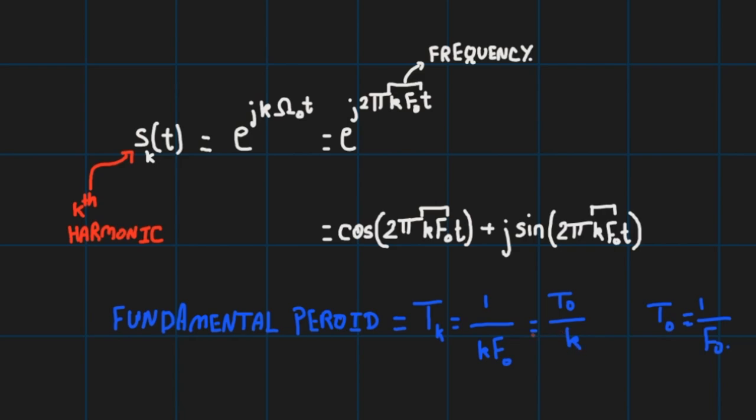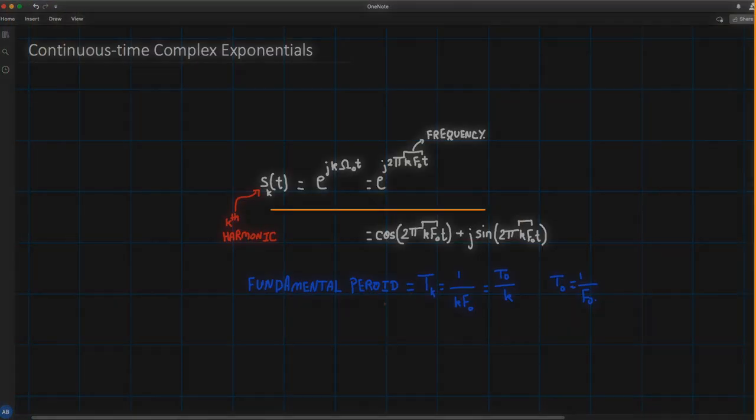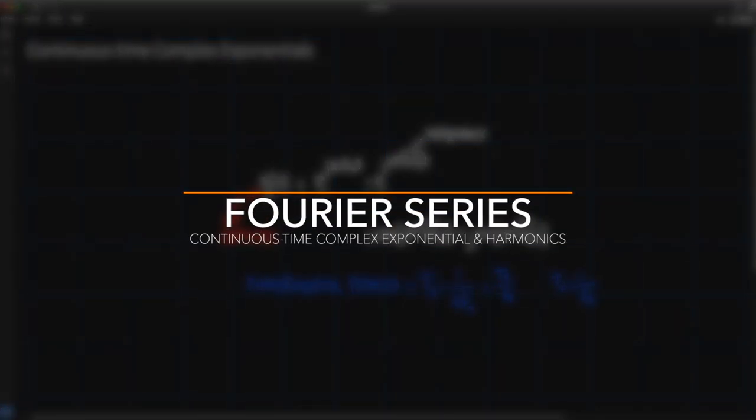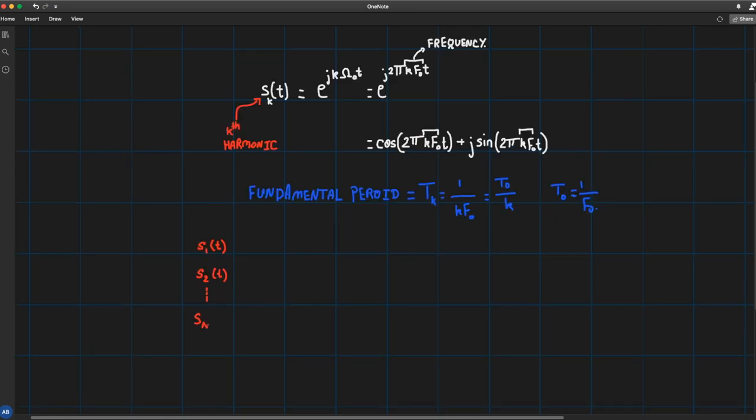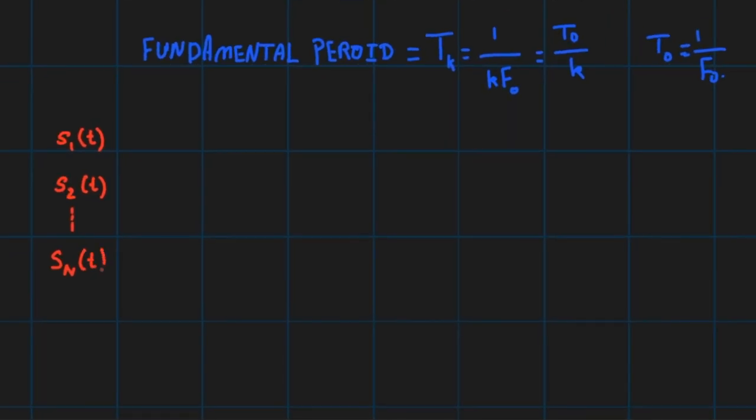So they're all related: all these s_k(t) signals are actually a fraction of T₀, a ratio T₀/k. Another thing to bear in mind is that all the s_k(t) signals have a common frequency or period.